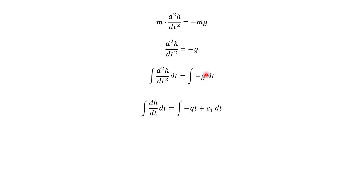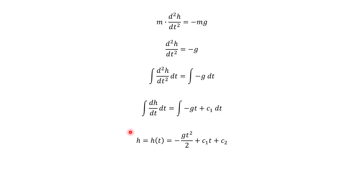On the right side, our variable is t, so think of g as a constant. When we integrate, we have negative g times t, and then our constant of integration, we'll call it c1. Then we're going to integrate both sides again, because what we're trying to reach is the original function h. So we have its first derivative — integrate one more time.